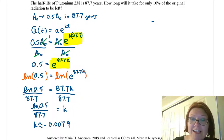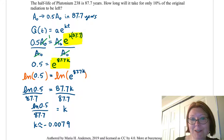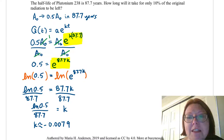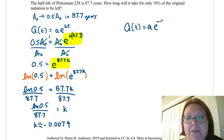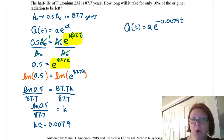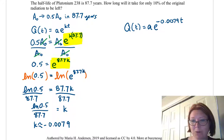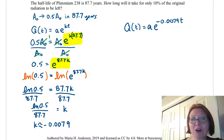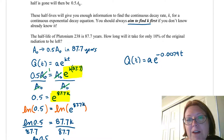That shouldn't be a surprise, because we know this is an exponential decay problem, and the k value should be negative. Let's go ahead and rewrite the model: Q of t equals A times e to the negative 0.0079t. This decay rate holds for plutonium no matter what we start with or how long the decay happens. Remember — always aim to find k first, then build the model.